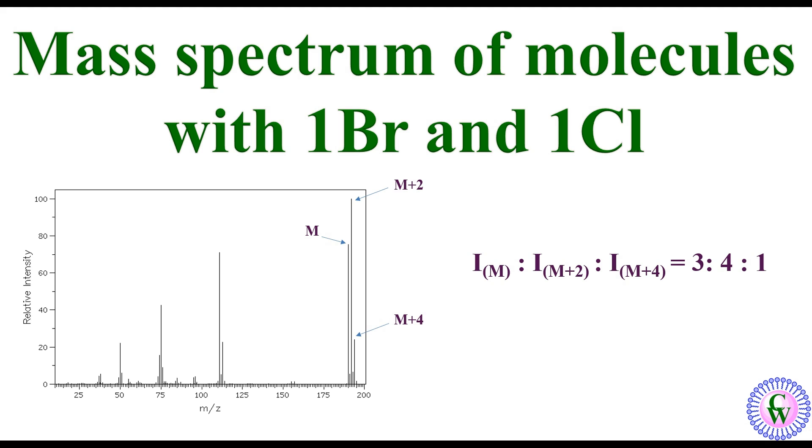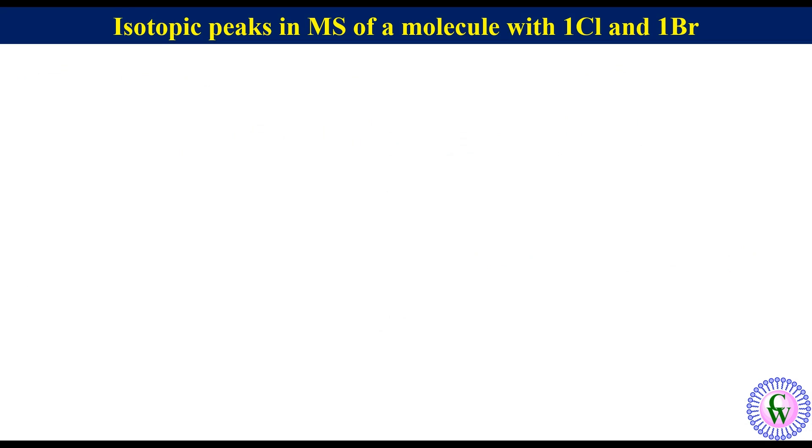In this video we are going to discuss the case where a molecule has one chlorine atom and one bromine atom in it. As we know, chlorine has two isotopes Cl-35 and Cl-37. If we talk about their natural abundance, Cl-35 is 75% and Cl-37 is 25%, or we can say that the relative abundance of Cl-35 and Cl-37 is 3 to 1.